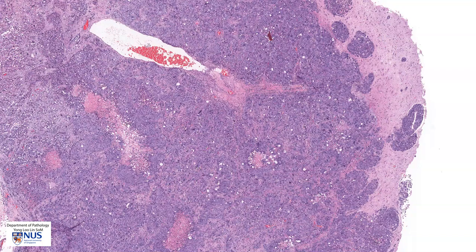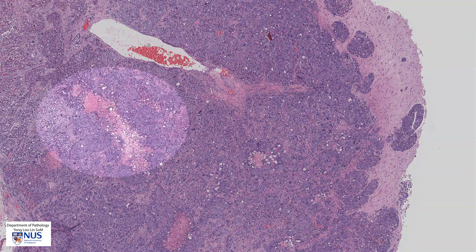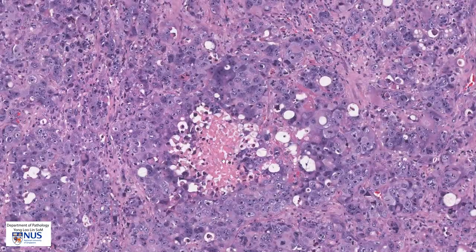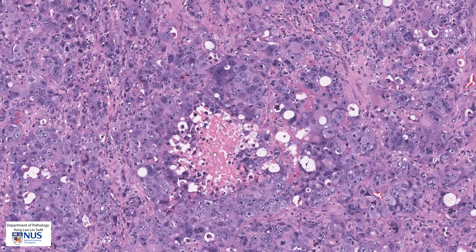Another feature that we can identify at lower magnification are these islands of pinkish areas here, and perhaps another area here. Taking a closer look, this actually represents foci of necrotic tumour cells with very dense eosinophilic cytoplasm and loss of nuclei. We have a few cells here with apoptotic nuclei that are just shrinking away.